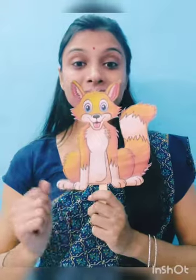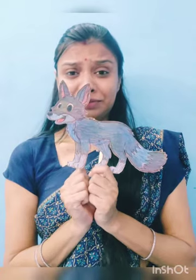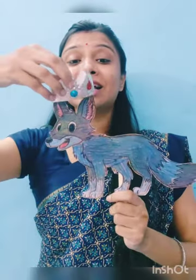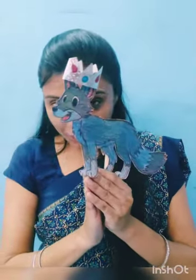Who is this? Jackal. Once a jackal fell in a drum full of blue paint. He became blue from head to toe. All the animals were scared. They thought of him as their king and took care of him. The jackal was happy.